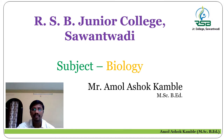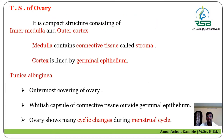Our first point of today's discussion is the transverse section of the ovary. The ovary is the female reproductive gonad. The transverse section of the ovary consists of an outer and an inner part. Basically, the ovary is a compact structure. It consists of an inner medulla and an outer cortex. The inner portion is called the medulla, and the outer portion is called the cortex. Each part — medulla and cortex — has specific characteristics.